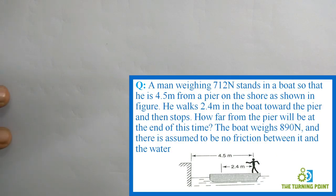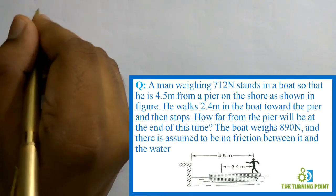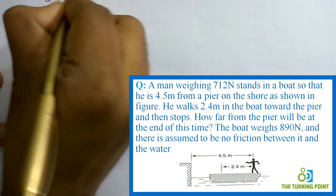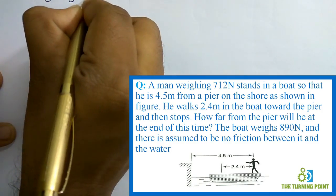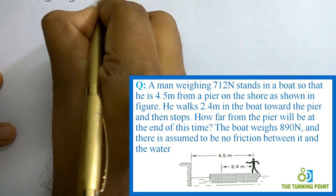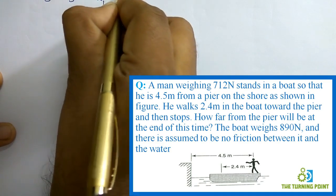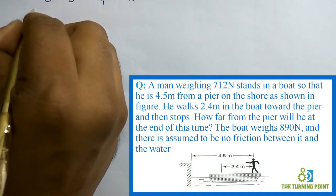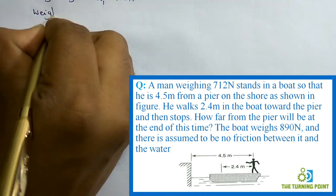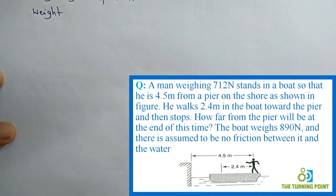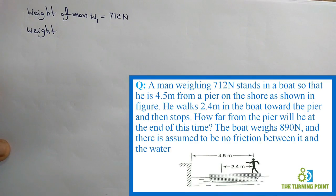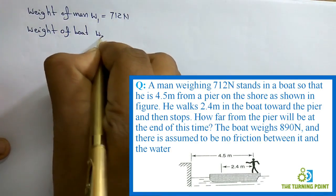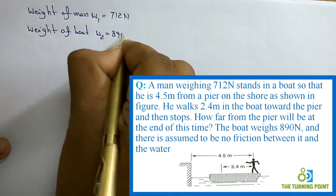Let us write the given data. Weight of man, considered as w1, is 712 newtons. Weight of boat, considered as w2, is 890 newtons.